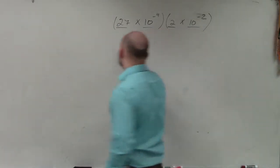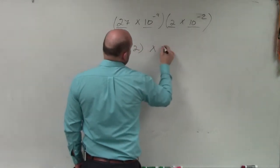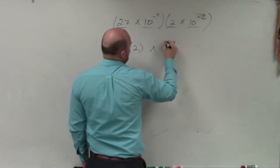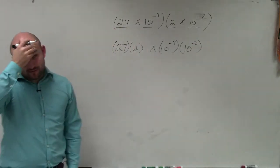So what I have here is 27 times 2 times 10 to the negative fourth times 10 to the negative second. Does everybody follow me with this?